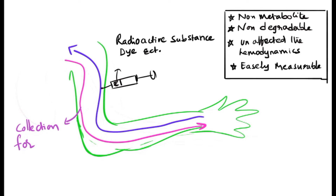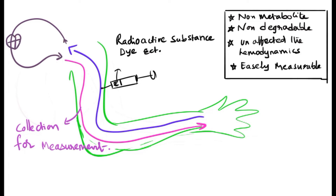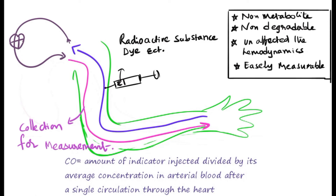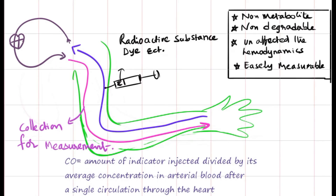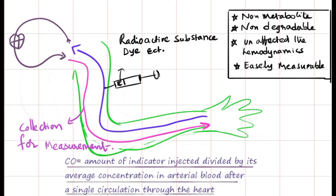A series of samples from the brachial artery is collected to assess the concentration of the substance in each circulation. Once we inject the radioactive substance or dye, it travels to the heart and returns to the brachial artery. The definition of cardiac output by this method is: the amount of indicator injected divided by its average concentration in arterial blood after a single circulation through the heart.